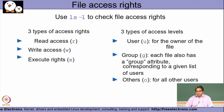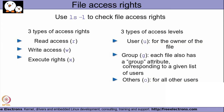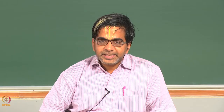Coming down to the different types of file access rights that UNIX allows, there are three types of access rights: one is called read access, another is write access, and another is execute access. UNIX being a multi-user operating system, the OS needs a mechanism to know what kind of access privileges a particular file can be given to different types of users.